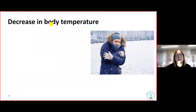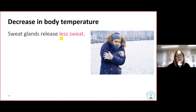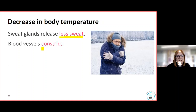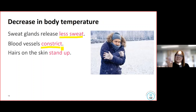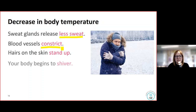Now let's look at what happens if there's a decrease in body temperature. The sweat glands release less sweat. The blood vessels constrict — think of a boa constrictor — constrict means to get narrower, the opposite of dilate. And the hairs on our skin stand up, giving us those goose pimples. We also begin to shiver. Let's look at the mechanisms involved in each one of these.